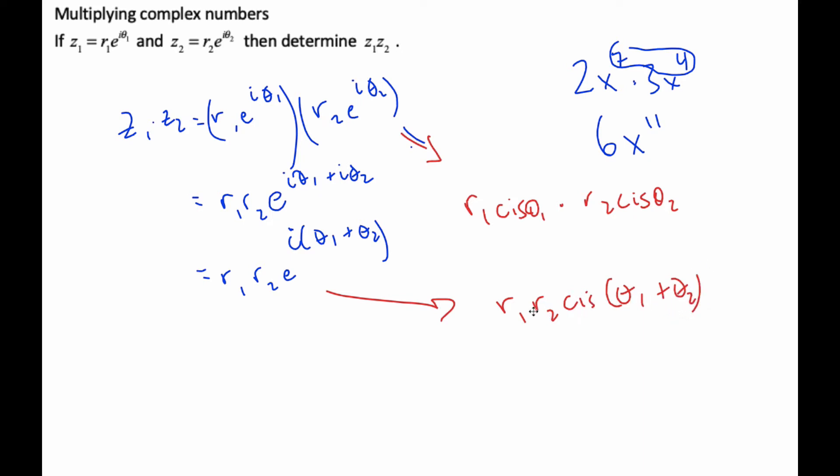So whether you're in polar form or trigonometric form or Euler's form, we add the angles together to get our new angle for our complex numbers.